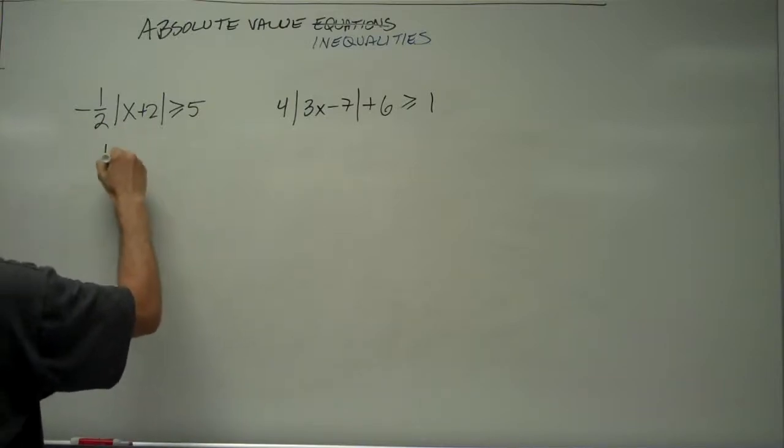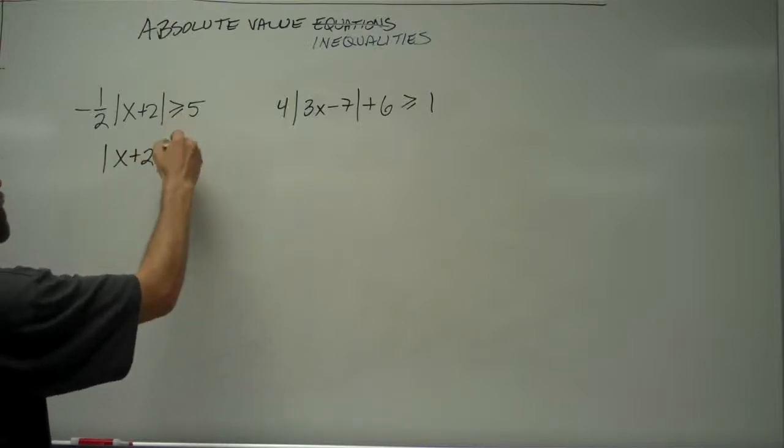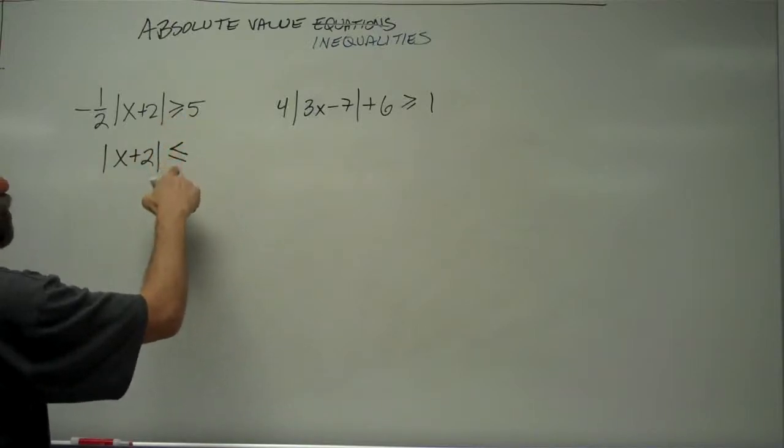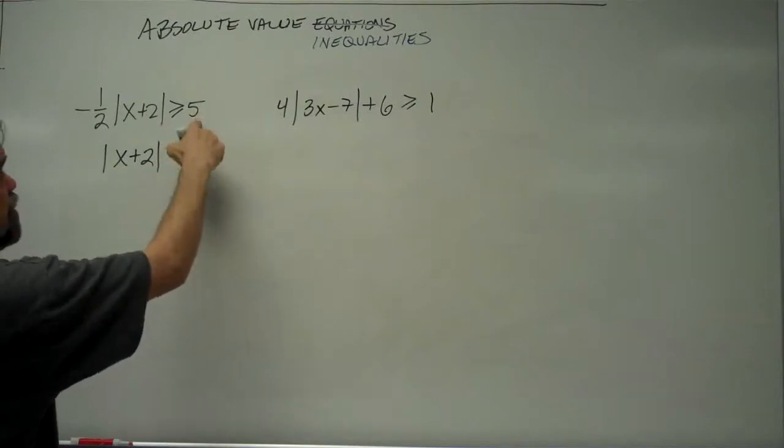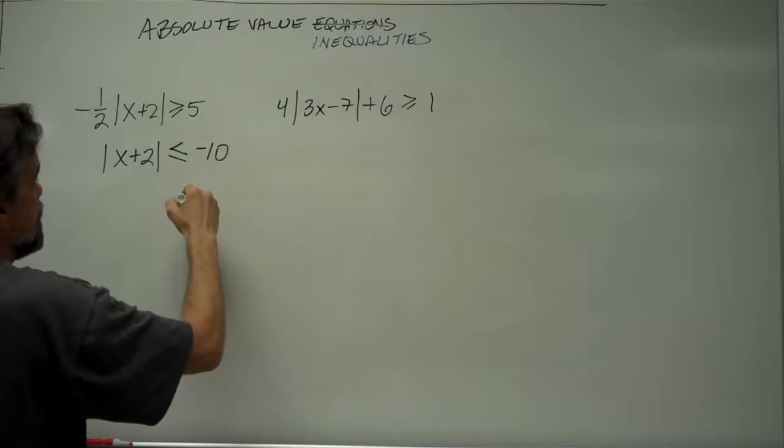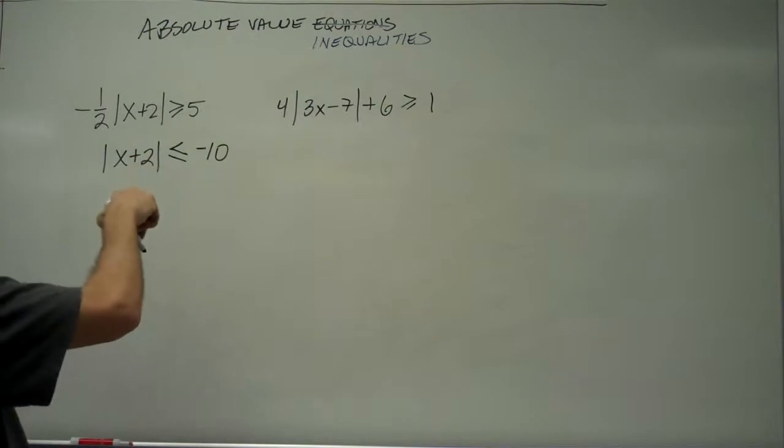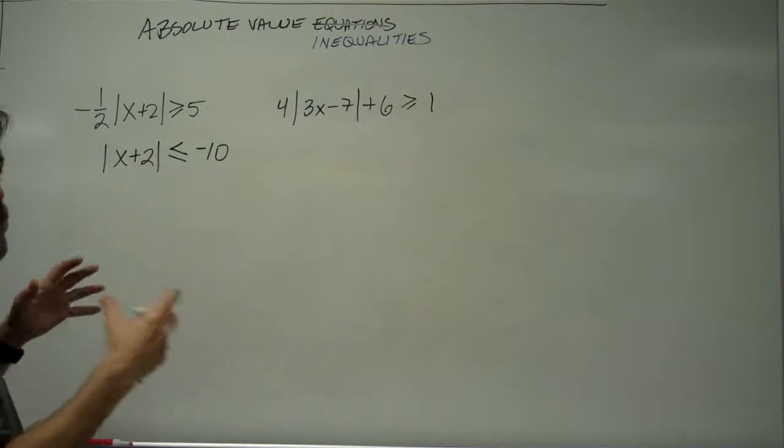Multiplying by negative 2 here, we get absolute value of x plus 2. Multiplying by negative 2 means we change the direction of our inequality. And multiplying by negative 2 times 5, that would give us negative 10. So now we have the absolute value of x plus 2 is less than or equal to a number.